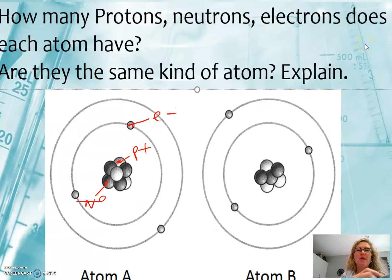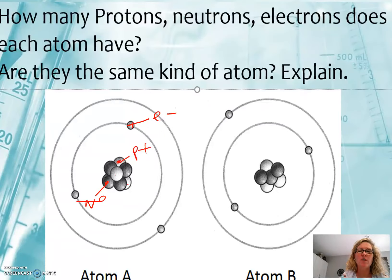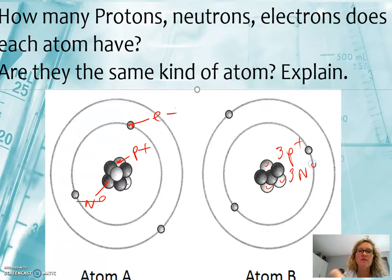The question is: how many protons, neutrons, and electrons does each atom have? You can quickly count: one, two, three protons and one, two, three, four neutrons in one atom. This one has one, two, three protons and one, two, three neutrons.